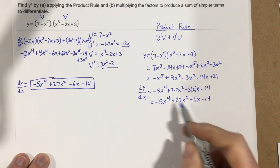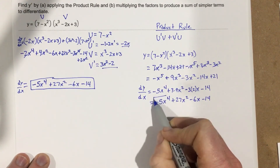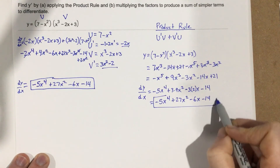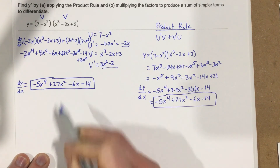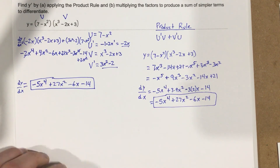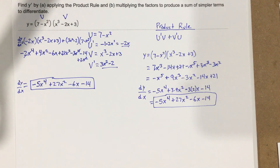And lo and behold, we get the exact same derivative that we had when we did the product rule. So you can see this is kind of a proof that the product rule works.